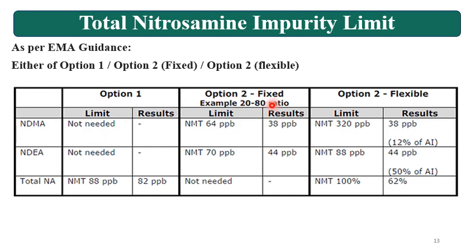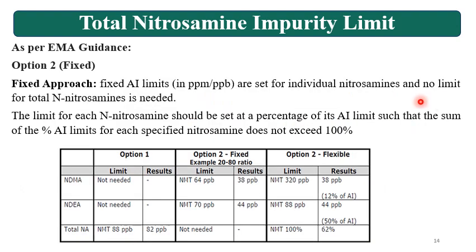In Option 2 Fixed, fixed AI limits in PPM/PPB are set for individual Nitrosamines and no total N-nitrosamine limit is needed. The limit for each Nitrosamine is set as a percentage of its AI limit such that the sum of the percent AI limits for each specified Nitrosamine does not exceed 100%. An example is an 80:20 ratio for the impurities. The limit is assigned as a ratio, and a total impurity specification is not required because the 100% is distributed into the ratios.